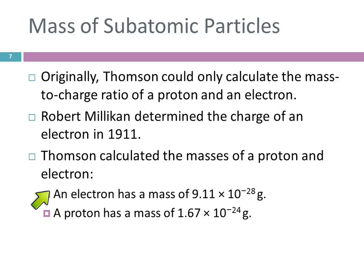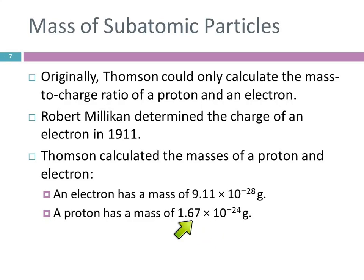It turns out their masses are really, really small. An electron has a mass of 9 times 10 to the minus 28 grams — that's a 9 with 27 zeros after the decimal point. The proton is more massive but still really small: 1.67 times 10 to the minus 24 grams. You do not need to memorize these numbers. If you need them on an exam, I'll give them to you.